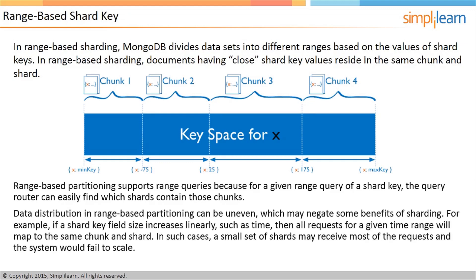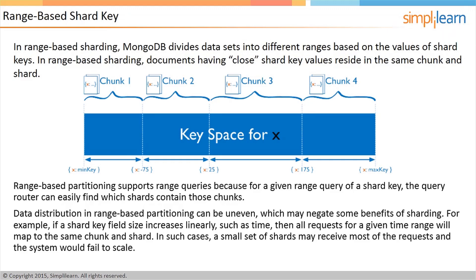Data distribution in range-based partitioning can be uneven, which may negate some benefits of sharding. For example, if a shard key field increases linearly, such as time, then all requests for a given time range will map to the same chunk and shard. In such cases, a small set of shards may receive most of the requests, and the system would fail to scale.